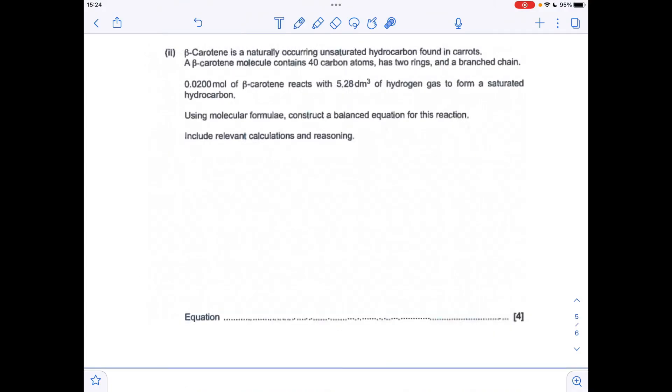And the last part of the question, quite tricky this, I think. So where do we start? Well, we're told that we've got 0.02 moles of beta carotene reacting with 5.28 cubic decimeters of hydrogen gas. So the first thing we can do is work out how many moles of hydrogen gas that is. So that's 0.22 moles of hydrogen. So the mole ratio between the beta carotene and the hydrogen is going to be 1 to 11. So that means there's 11 carbon-carbon double bonds in the beta carotene. So moving on to the equation now. So you'll notice I've written up next to saturated that this has got two rings and a branch, because the reaction with hydrogen is not going to change the fact that it's got the two rings and the branched chain.